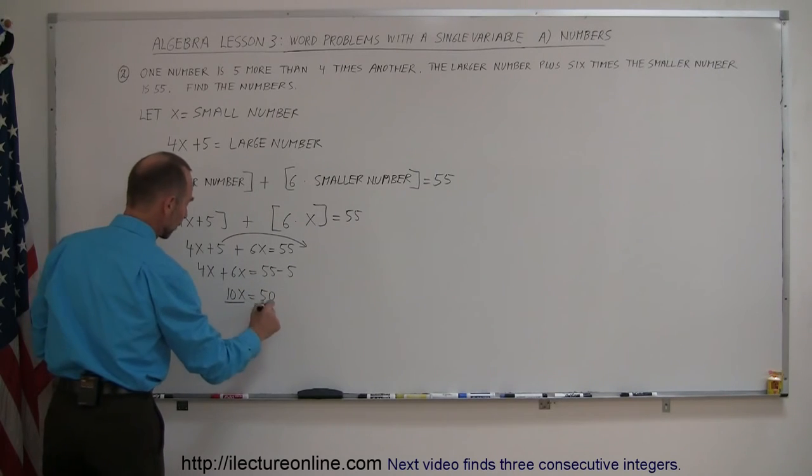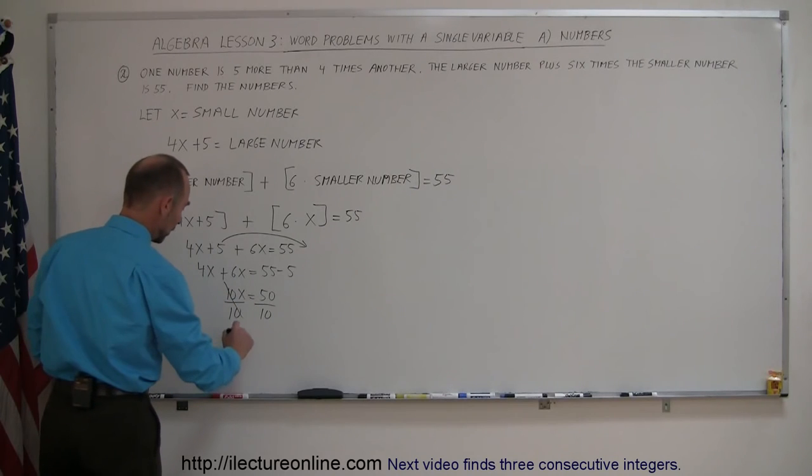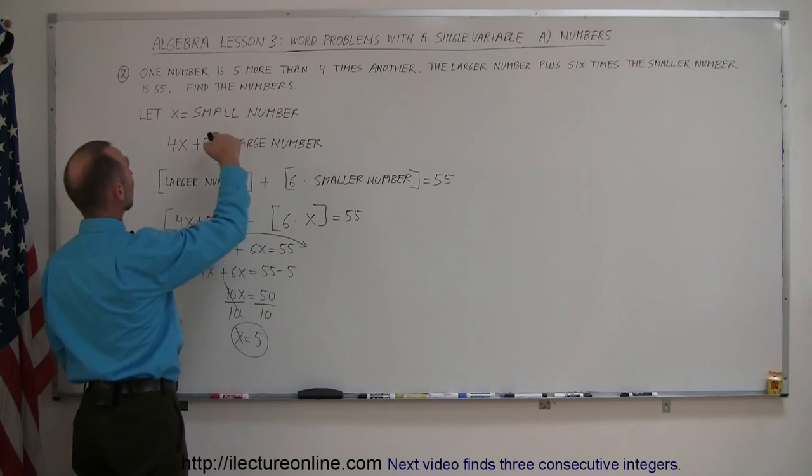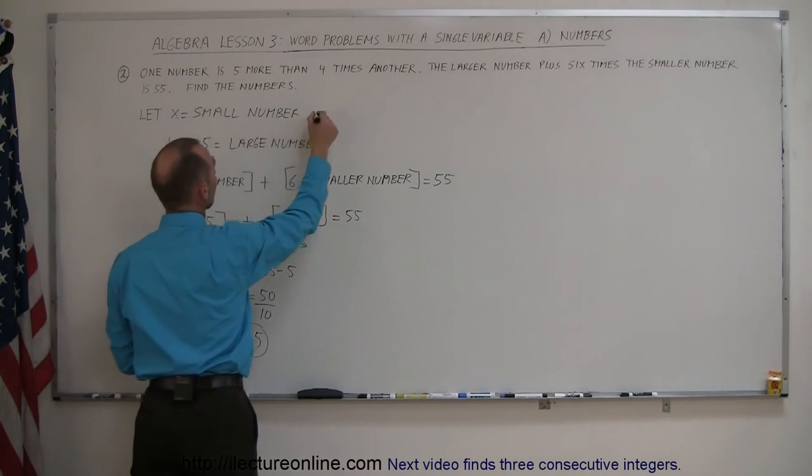So we end up with 10x = 50. Then we divide both sides by the numerical coefficient in front of x. The tens cancel out, so x = 50 ÷ 10, which is 5. Going back up here, since x equals the small number,